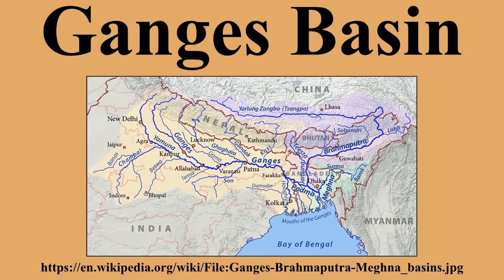Its catchment lies in the states of Uttar Pradesh, Madhya Pradesh, Bihar, Rajasthan, West Bengal, Haryana, Himachal Pradesh and Delhi, as well as the whole of Bangladesh, Nepal and Bhutan. Several tributaries rise inside Tibet before flowing south through Nepal.